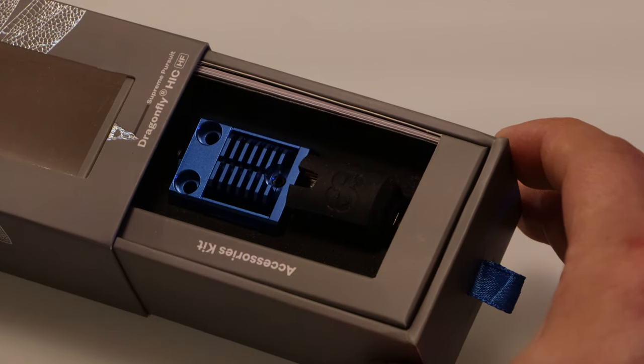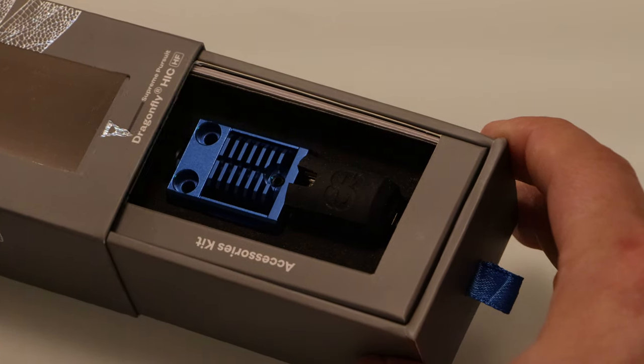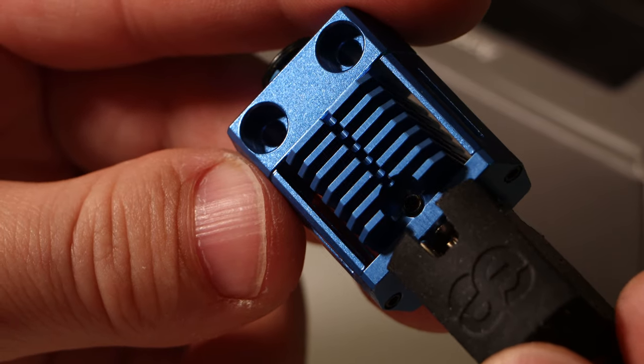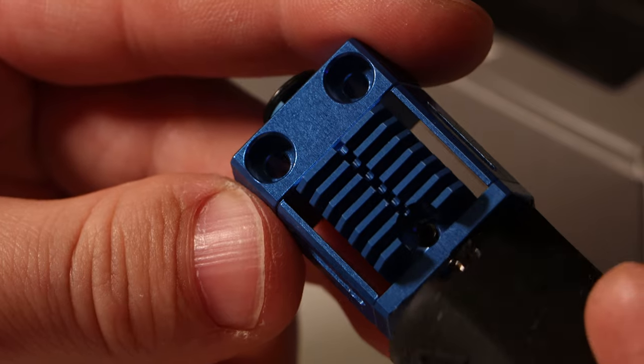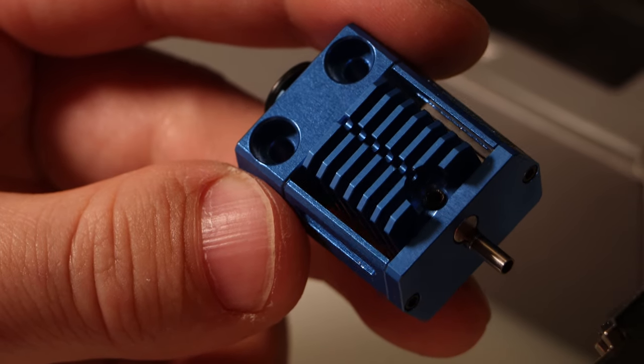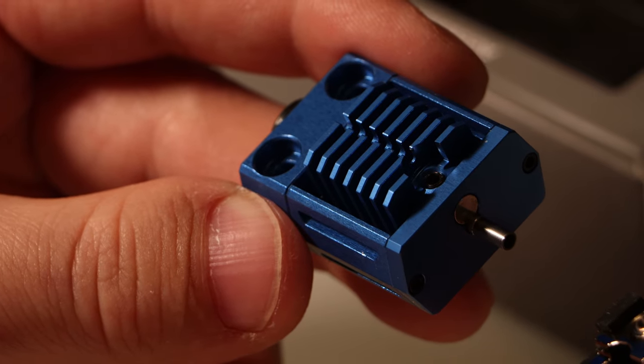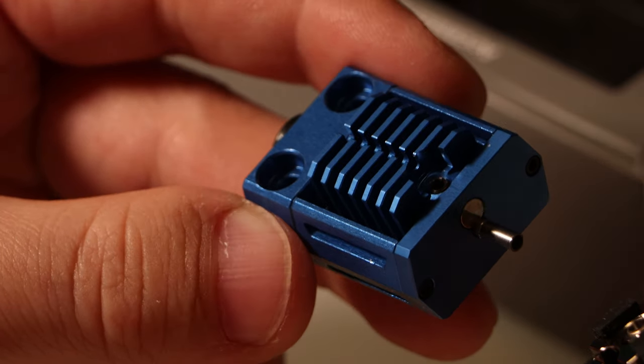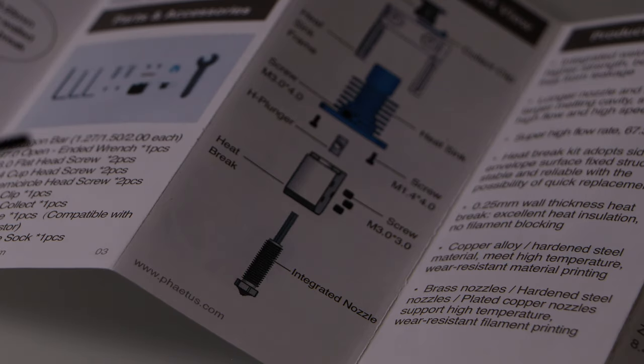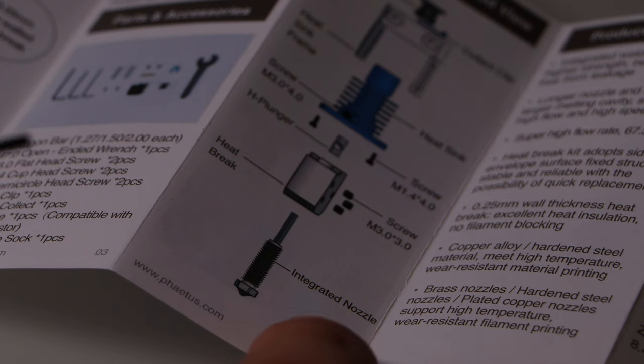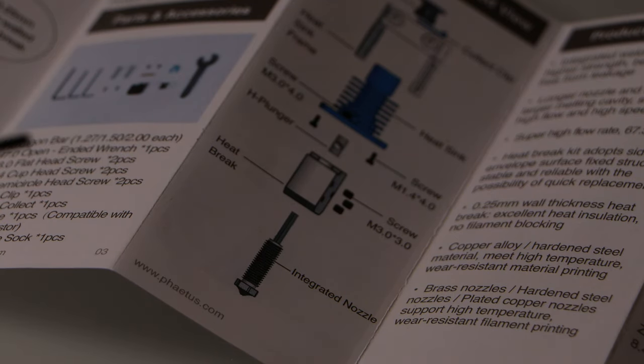But when I was taking a look at this thing earlier, I made a big mistake. I took it out of its packaging and tried to unscrew the hotend. The only problem is you're not supposed to unscrew this hotend. It's some kind of bimetallic heatbreak, so I basically just broke it immediately. I guess I probably should have read this instruction manual first. It looks like the part that I broke is called the integrated nozzle, and I think it's just the nozzle with the heatbreak attached to it.